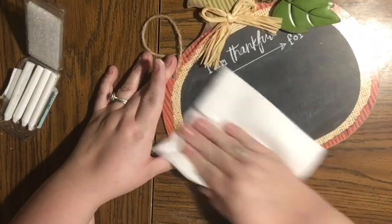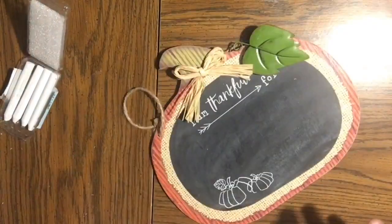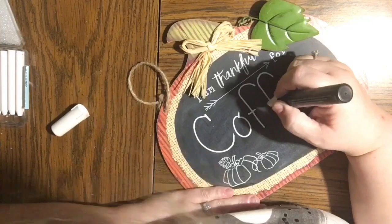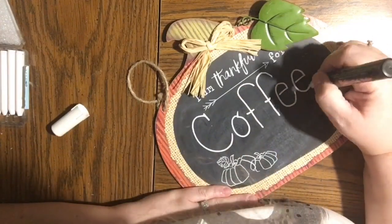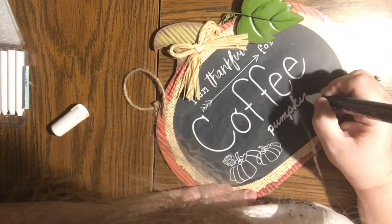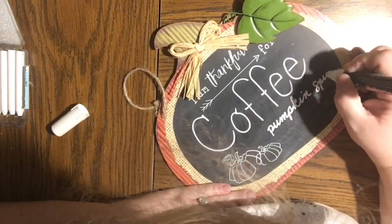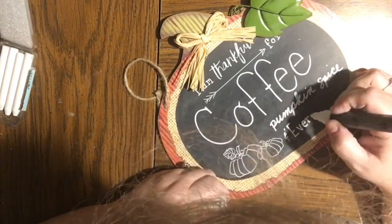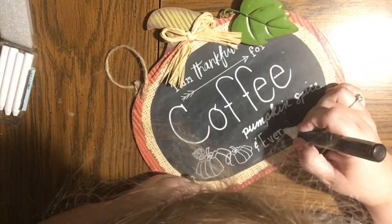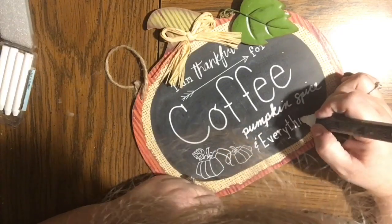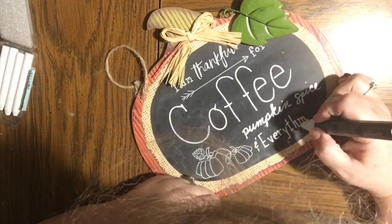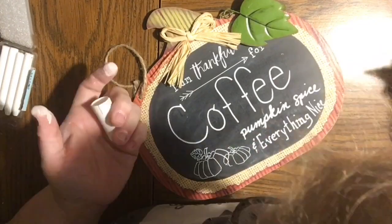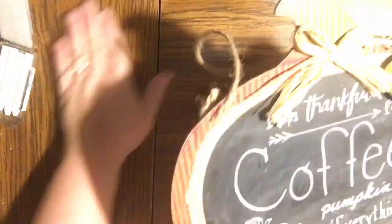This chalkboard is a chalkboard from the Dollar Tree and it says 'I'm thankful for,' and this is going to be my autumn coffee bar menu. So I'm writing 'coffee,' I'm thankful for coffee, and then underneath I wrote 'pumpkin spice and everything nice.' Like I said, I had a heck of a time, I made a few mistakes. You'll see, just stick around if you want to see the bloopers at the end, I actually kept them for you.